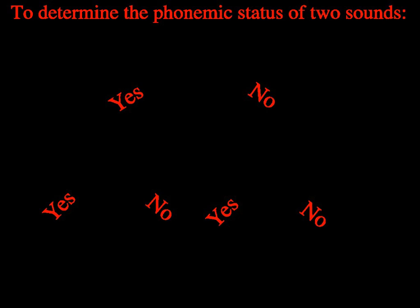For example, t as in 'stop' and as in 'letter' are allophones for the phoneme /t/ in English, while these two are considered to be different phonemes in Spanish. On the other hand, d as in 'dolor' and as in 'nada' are allophones for the phoneme /d/ in Spanish, while these two are considered to be different phonemes in English.